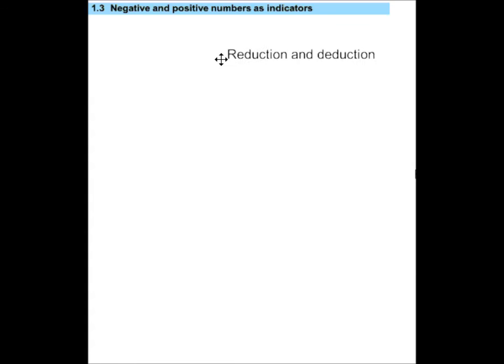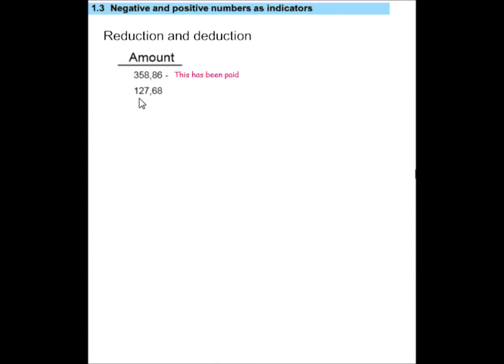Negative and positive numbers as indicators. Numbers can show reduction and deduction. So for example, if I have a clothing account and I see that on my account, it means that I owe the store R358.86. If this was an electricity bill, it would show that last month I paid R358.86. I now owe 127.68. That is my new balance.